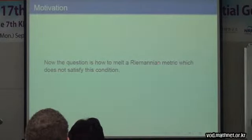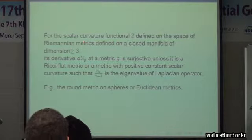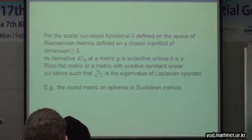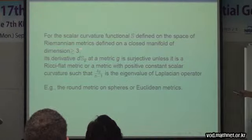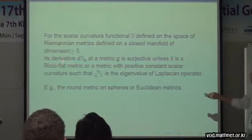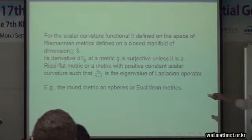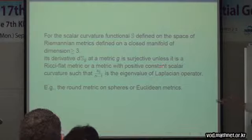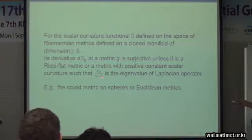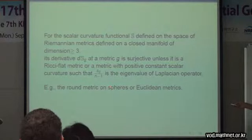The question is how to melt a Riemannian metric which doesn't satisfy this surjectivity condition. For comparison, in the global case — meaning the whole manifold scalar curvature deformation — the derivative of S is surjective unless the metric has positive constant scalar curvature with some special property. A particular example is the round metric on spheres or the Euclidean metric — the round metric on spheres is one prototype where the derivative is not surjective.